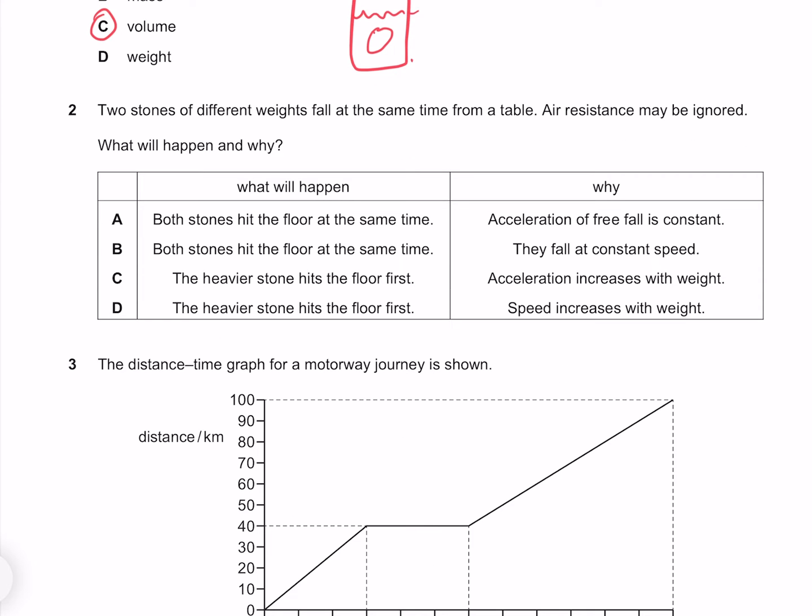Two stones of different weights fall at the same time from a table. Air resistance may be ignored. What will happen and why? If we're able to ignore air resistance, then all objects accelerate at the same rate due to gravity, meaning that both stones will hit the floor at the same time. Because they're under acceleration, they do not fall at a constant speed, they will have an acceleration of roughly 10 meters per second per second. So our answer is A.